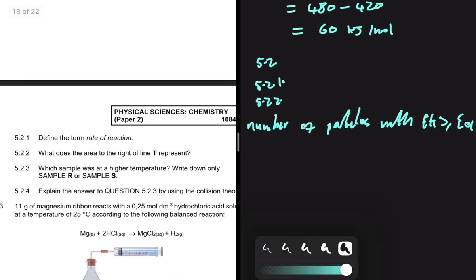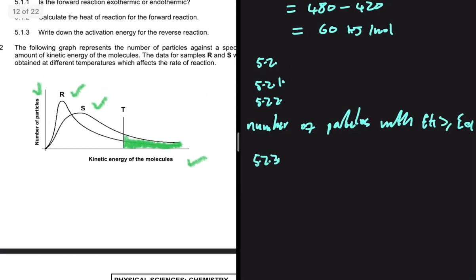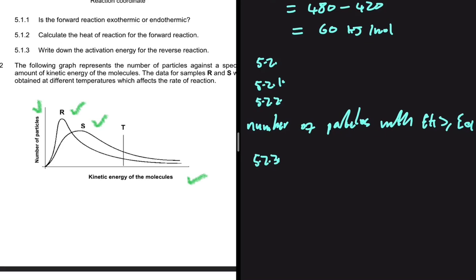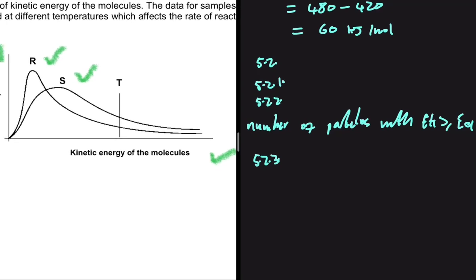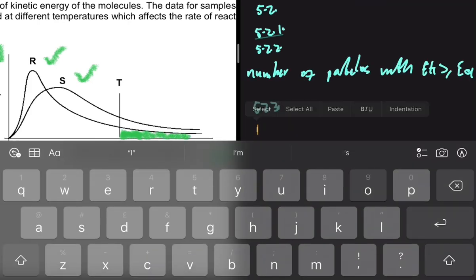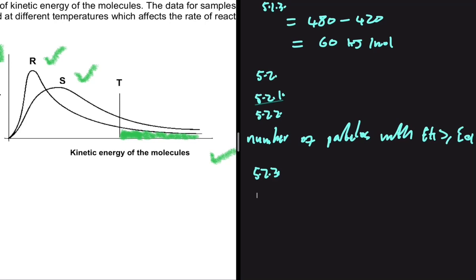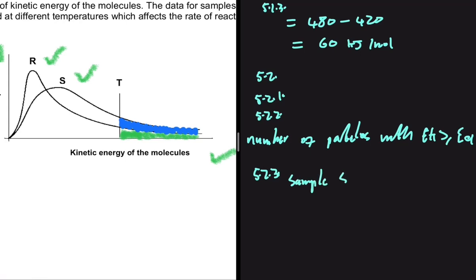Moving to 5.2.3: which sample was at a higher temperature — R or S? We know that when temperature is increased, more particles will have sufficient kinetic energy. Looking at R, the number of particles with sufficient kinetic energy is given by that graph, but for S, there is an additional portion as well. So the answer to 5.2.3 is S. Another way to see it is that when temperature is increased, the peak goes down and shifts to the right, just like what happens with S.